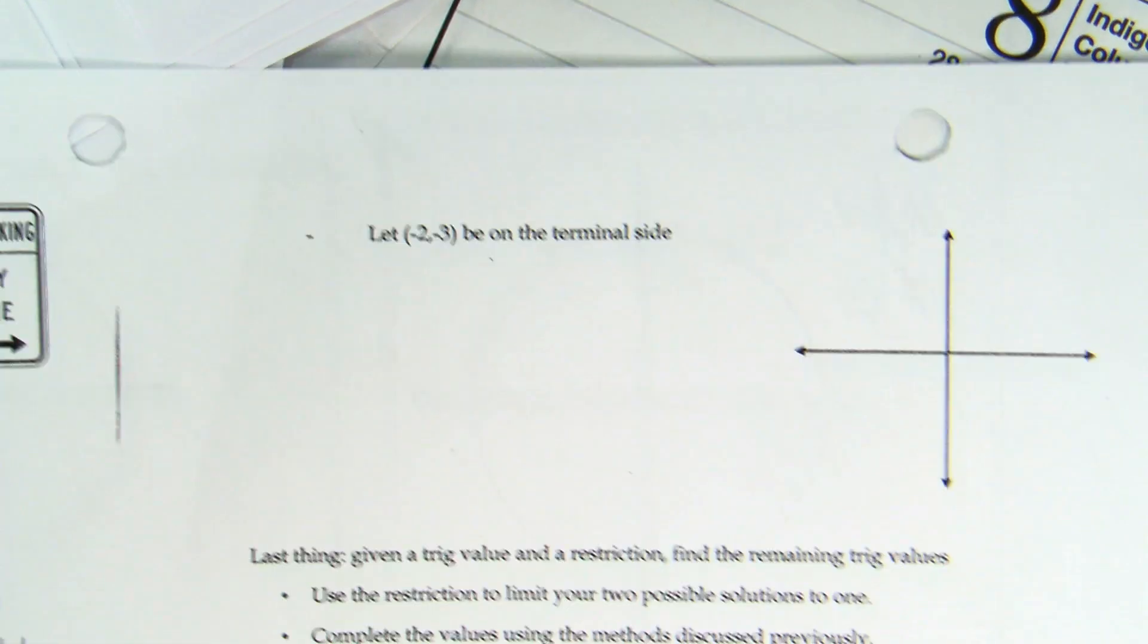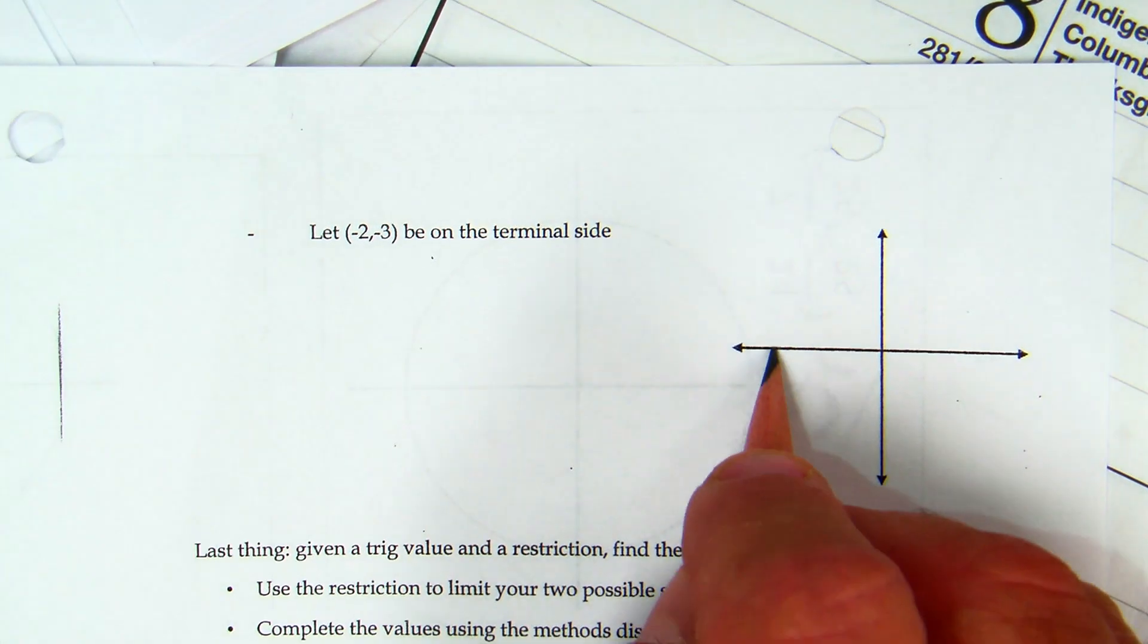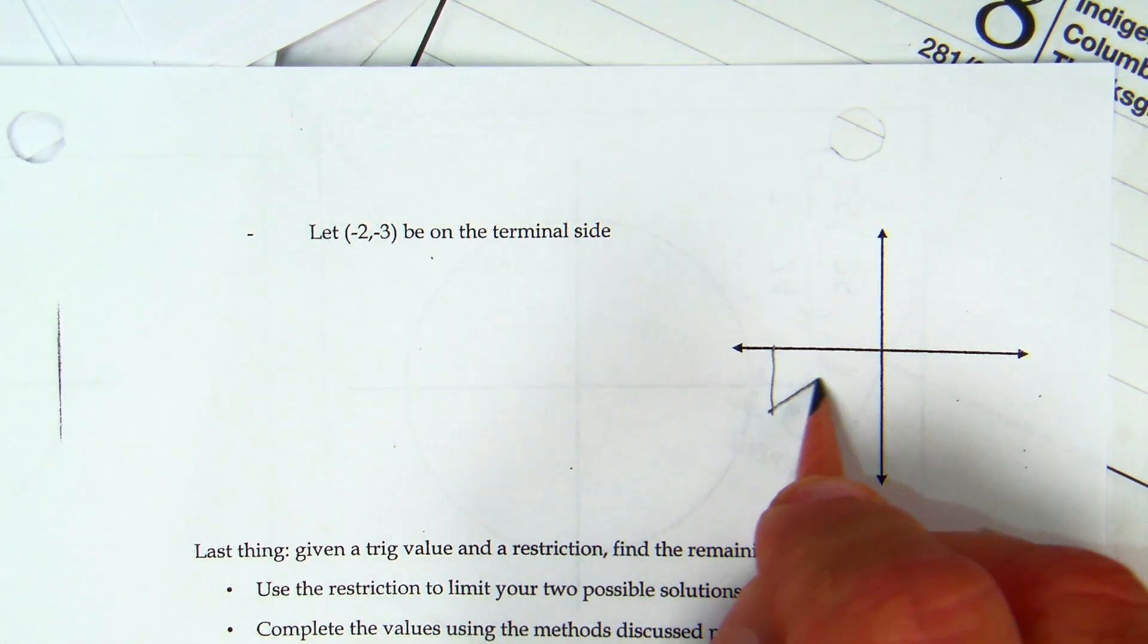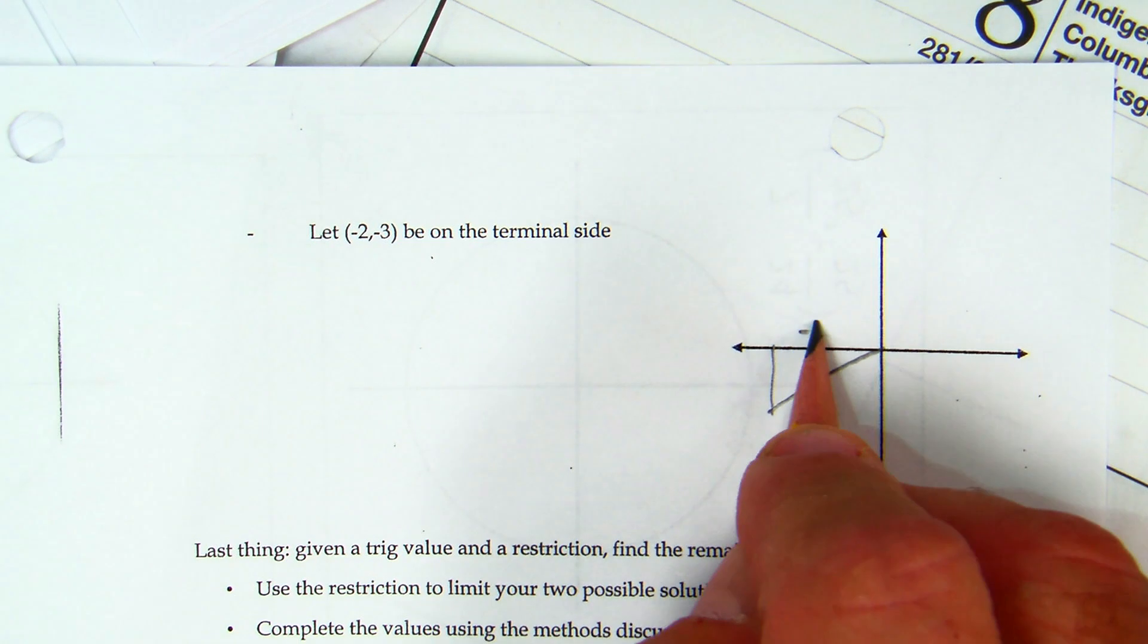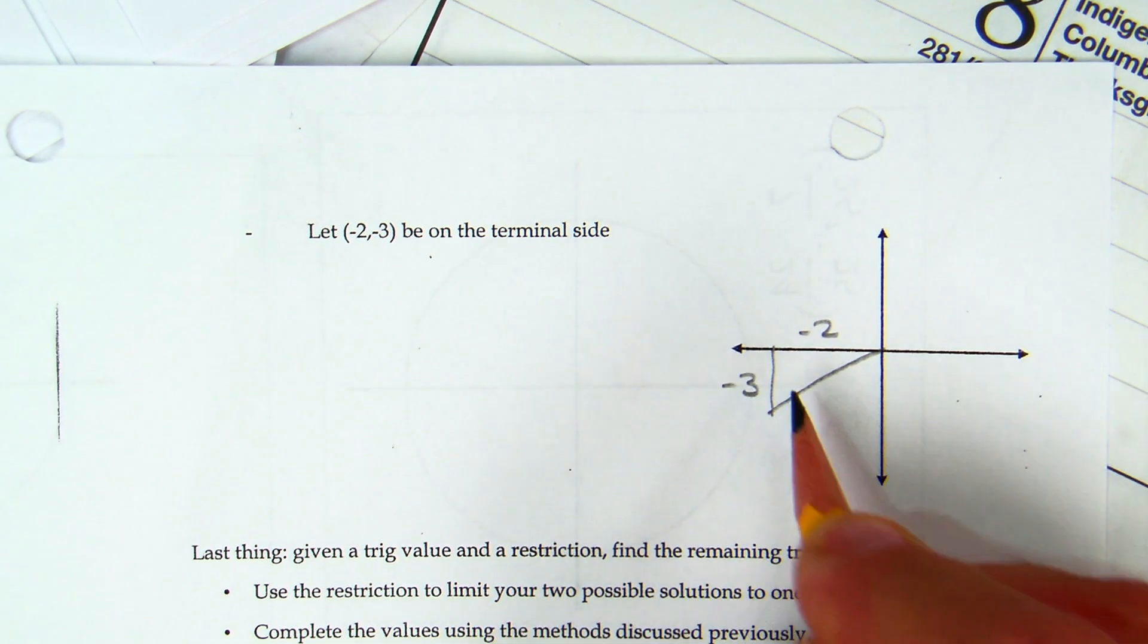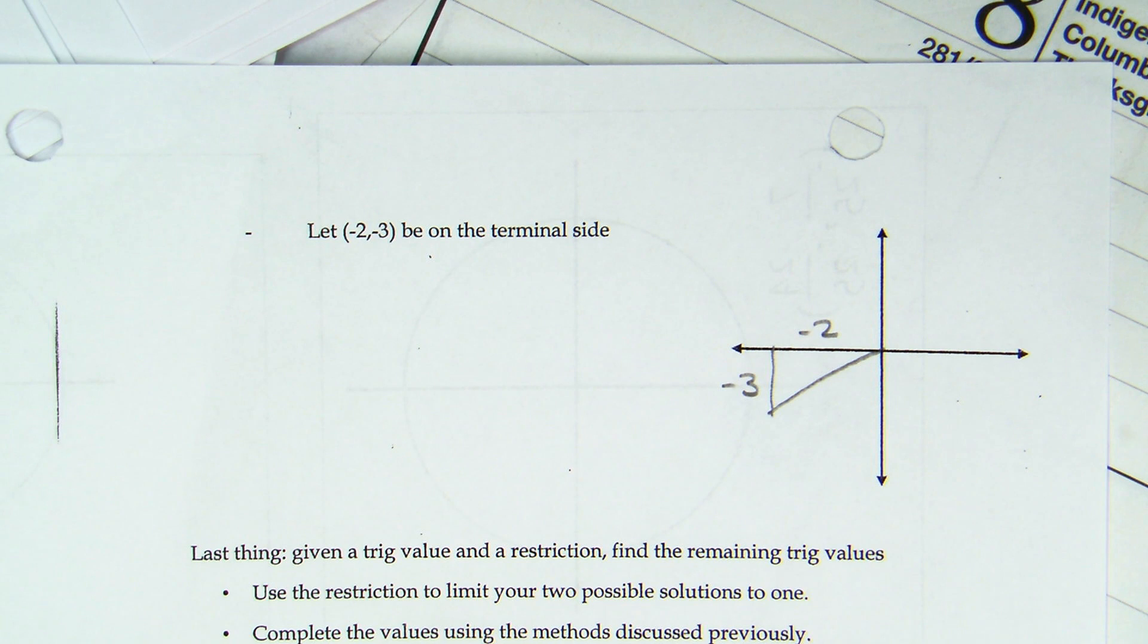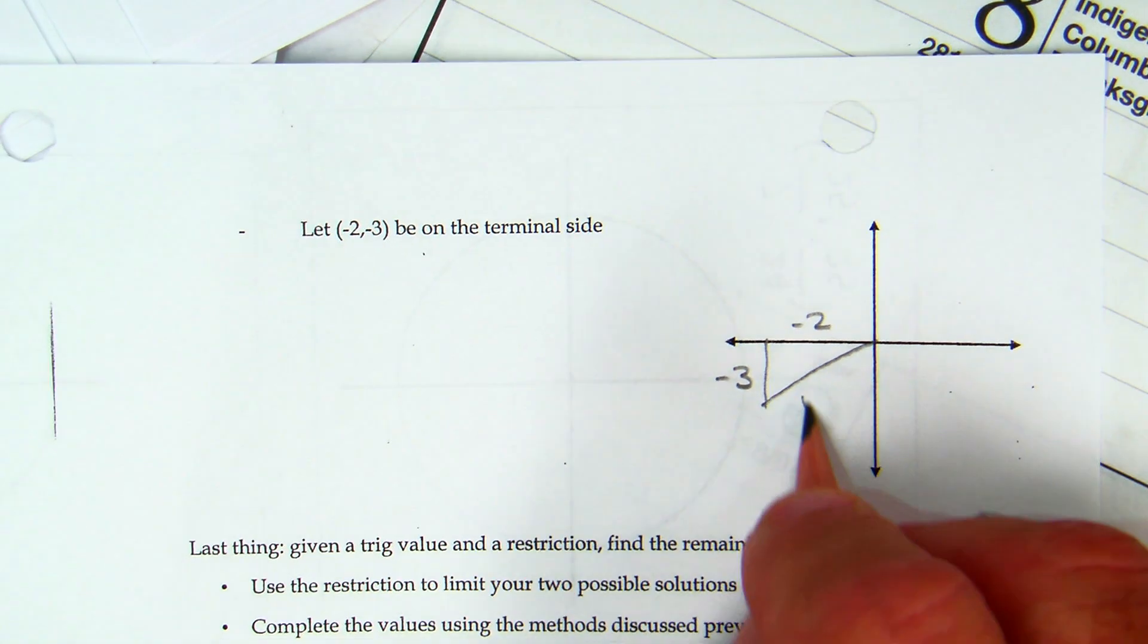So, negative two, negative three on the terminal side. That's my negative two. That's my negative three. In case you encounter one that is not a triple. Two squared is four. Three squared is nine. What's four plus nine? Thirteen. Square root of thirteen.